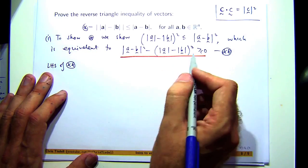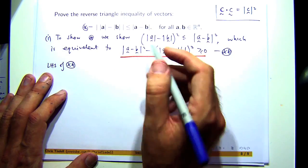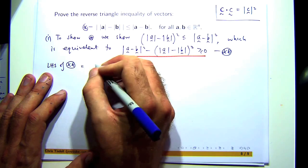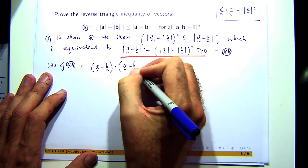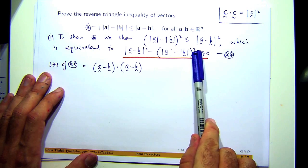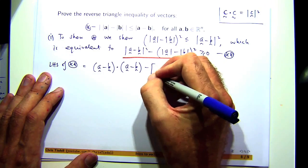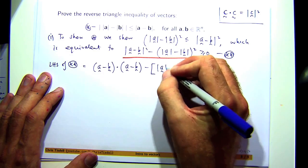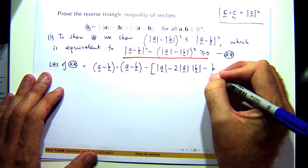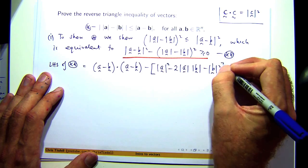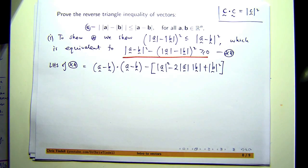So the left-hand side of double star is just this. Now, this can be written as a dot product. It's a square of a length. And this is just a square of real numbers, so I can expand that in the usual way.